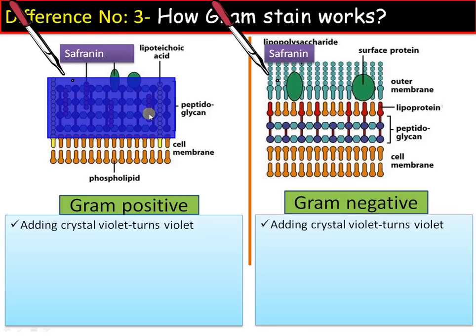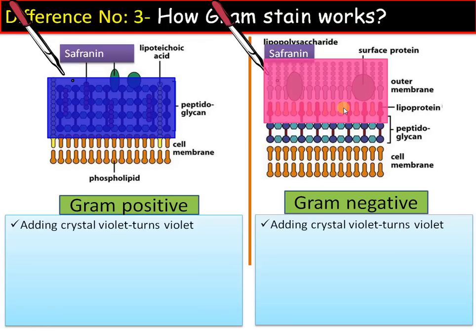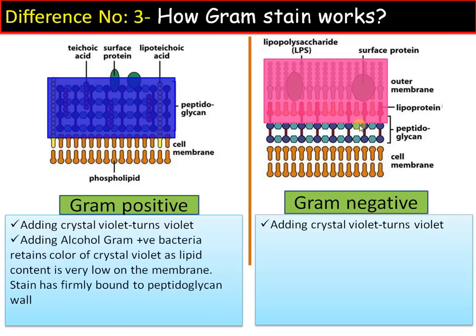The next step is the addition of safranin. On addition of safranin, gram-positive bacteria has no effect as crystal violet has already bound to the peptidoglycan wall. Whereas in the case of gram-negative bacteria, which lost the color of crystal violet on alcohol treatment, addition of safranin will make the bacteria pink or purple as the bacteria take up the stain. The difference in staining is due to the difference in cell wall composition, especially the amount of lipid in the cell wall.